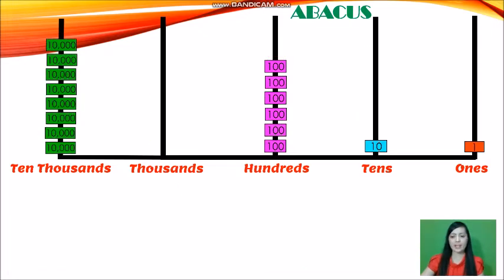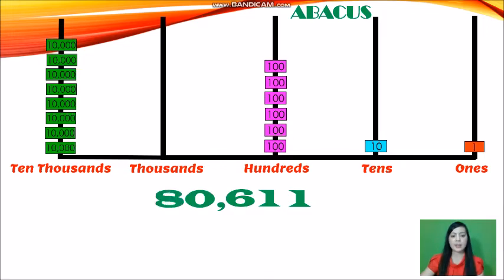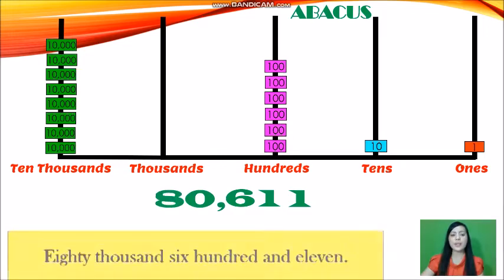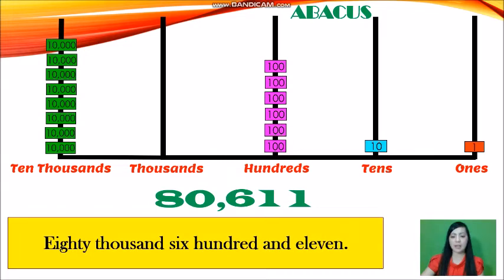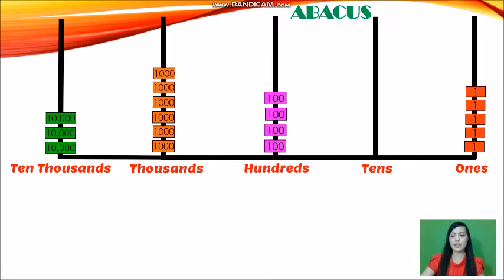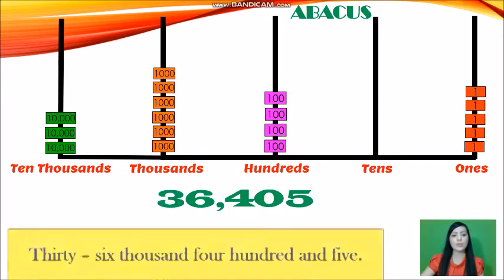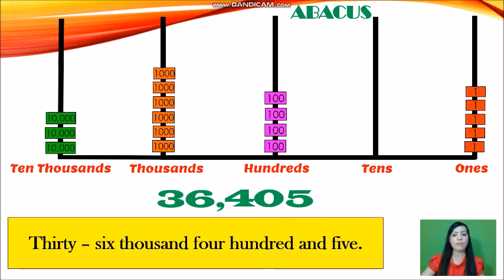Next one. We got 1 in the 1s place, 10 in the 10s place, and 6 in the 100s place. We don't have anything in the 1,000s place, so just put 0 there, and then 8 in the 10,000s place. So we can read the number as 80,611. Another one — we got 5 in 1s, 0 in 10s, 4 in 100s, 6 in 1,000s, 3 in 10,000s. So we can read the number as 36,405.